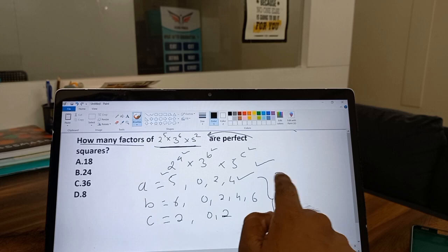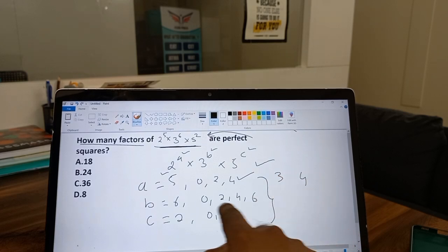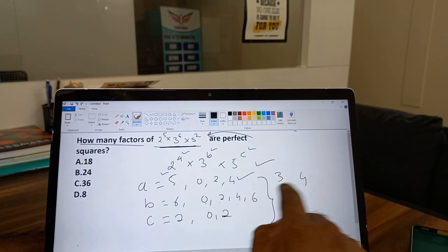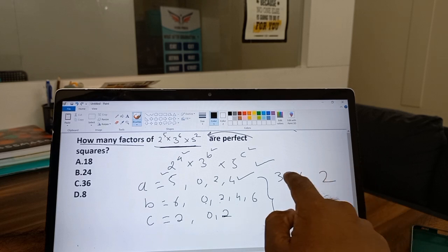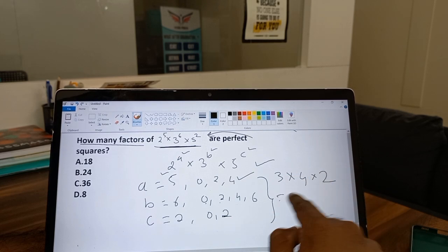For a is 3, and b is 4—1, 2, 3, and 4—and final values for c is 2. Now this is a simple product which you will get: 4 × 2 is 8, 8 × 3s are 24.